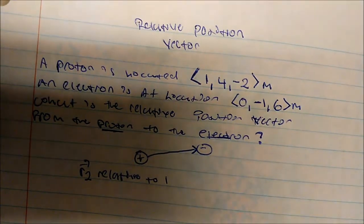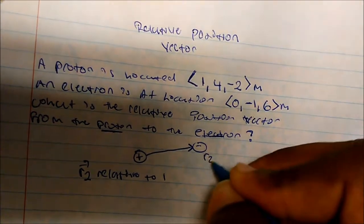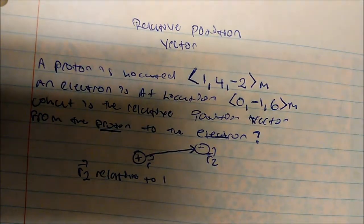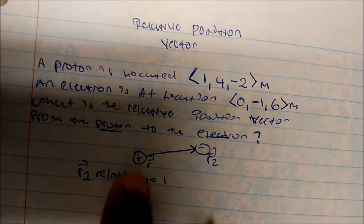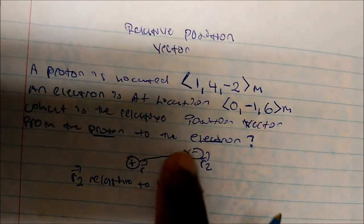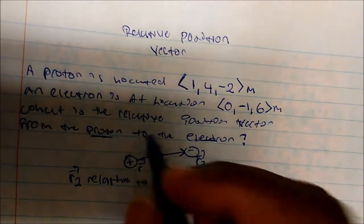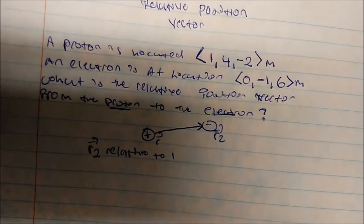So what is the relative position vector from the proton to the electron? The electron is going to be my R2. My proton is going to be my R1 because it's going from the proton to the electron. So wherever my arrow is pointing to, that is my R2. The tail starts at R1.